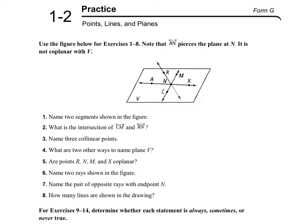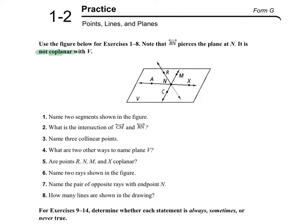It says, use the figure below for exercises 1 through 8. Note that line RN pierces the plane at N — it's a line that goes through, like, say we have a piece of paper and it cuts through it. It is not coplanar with V. As a review, coplanar means that they are on the same plane, so not coplanar means it's not on the same plane.